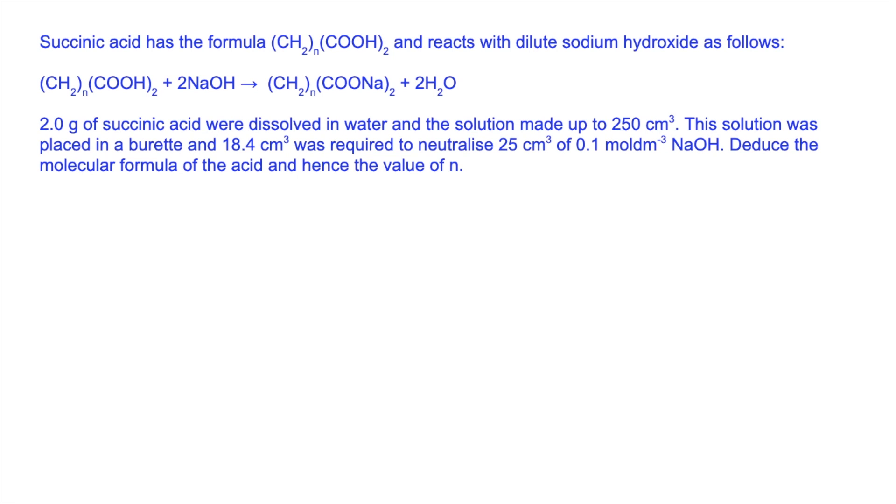The second one: we've got to work out the value of n, in other words how many CH₂'s are in the formula of succinic acid. Obviously we're going to need to know the MR and then subtract what we know from the formula, and then we can get a value for n from that.